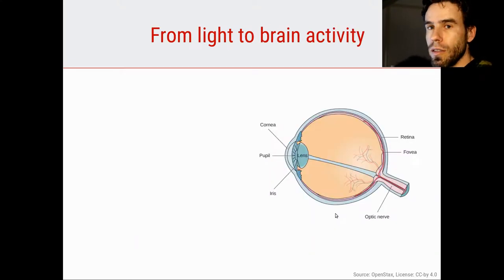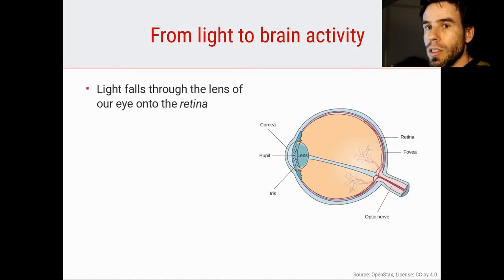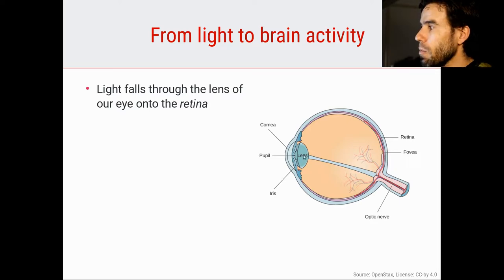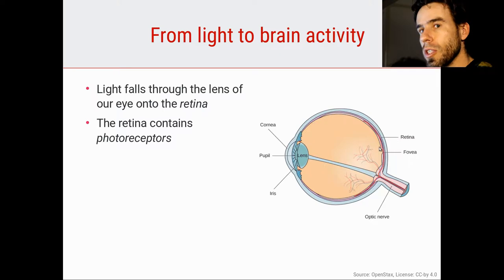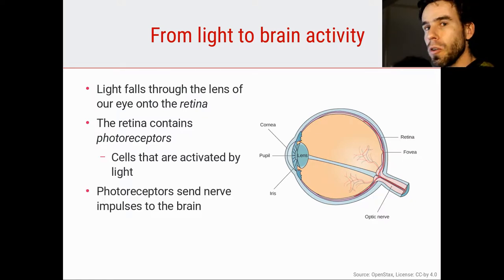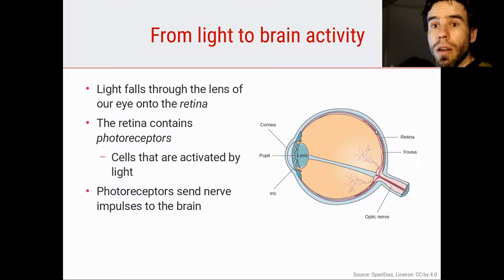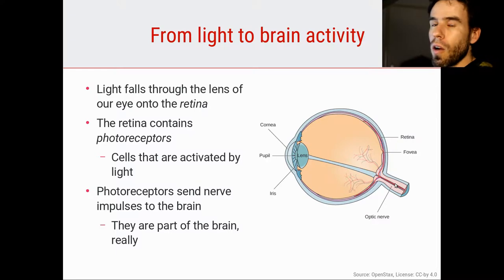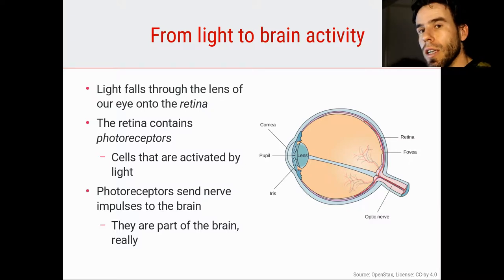So how does light lead to brain activity? Light falls through the lens in our eye. Here you see a picture of the eye viewed from above. Here you have the lens. Light comes from outside, passes through the lens, and then focuses on the retina here in the back of our eye. The retina is a part of our eye that contains photoreceptors — those are nerve cells that are responsive to light. Photoreceptors transfer nerve impulses to the brain. In the retina, there are photoreceptors, and these photoreceptors trigger action potentials, which go through axons here, through the optic nerve, towards the brain. You could say that our eyes and our photoreceptors are in a sense part of the brain — our eyes are so closely and directly connected to the brain that it makes sense to talk about them as though they are part of the brain.